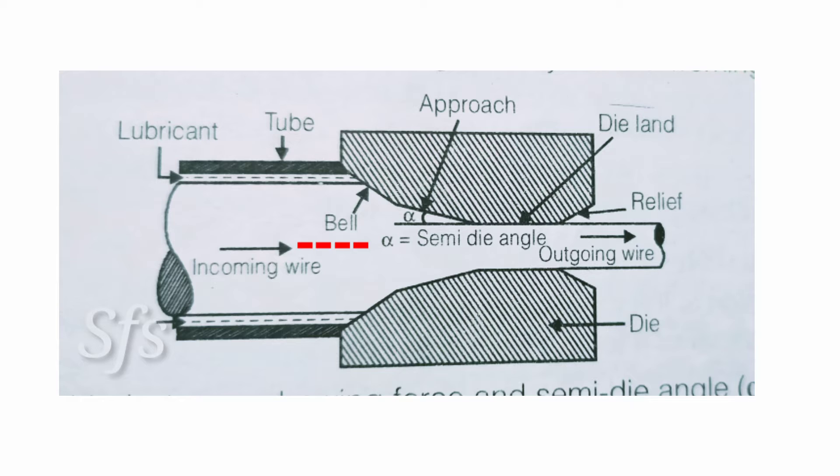When a wire comes here, the first tapered portion of the die is called the bell. You can see here it is called the bell. After that, it is chamfered at some degree, which is called the approach angle.